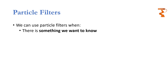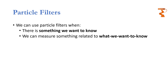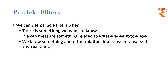The first question is: is there something we want to know? The answer is, of course, yes. The second question is: can we measure something related to what we want to know? If the answer is yes, we arrive at the last question: do we know something about the relationship between the observed and the real thing? As we cannot measure the real thing but we can observe something related to it, we must also know the relationship between the real and the observed thing. If the answer to all these questions is yes, then you may use particle filters to approximate and track something which you want to know.